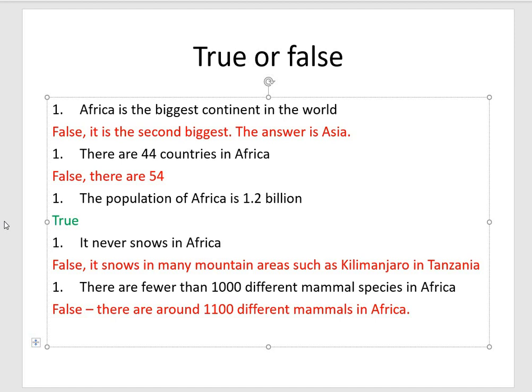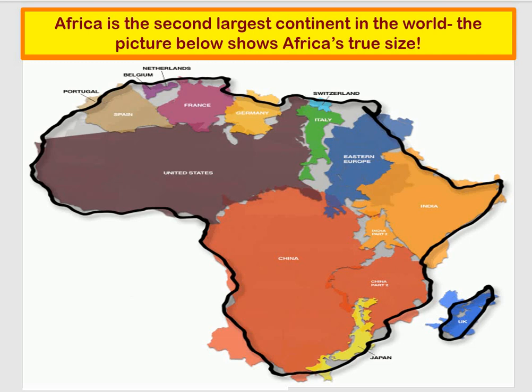Just to show you how big the continent is — look at this screen. It shows how big the continent of Africa is compared to lots of other places. We could fit all of these countries into the African continent: the USA, China, Japan, India, Eastern Europe, Italy, Switzerland, Germany, France, Belgium, Spain. And the UK is only the size of the island of Madagascar. So it is really, really big — not as big as Asia, but still really big.